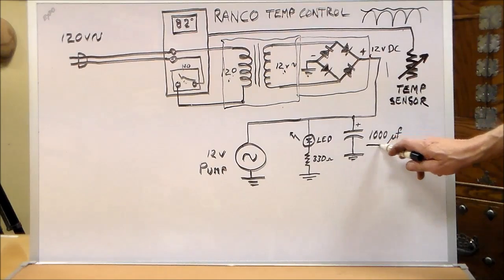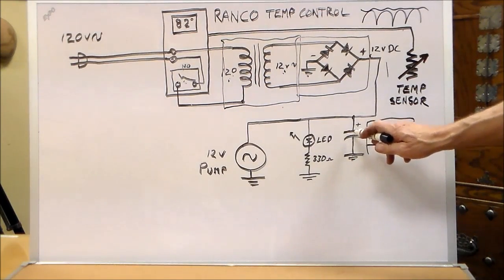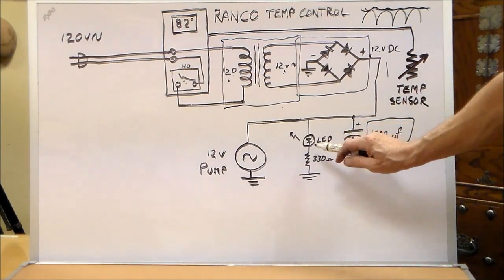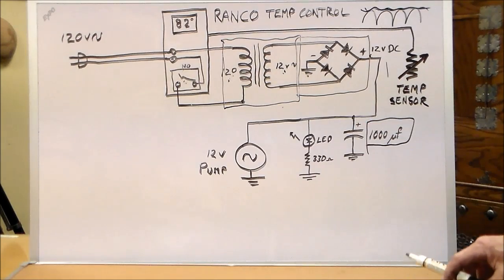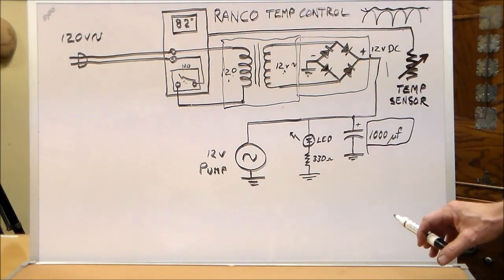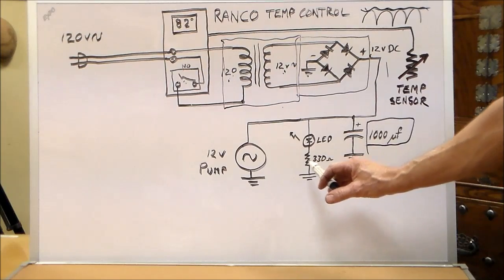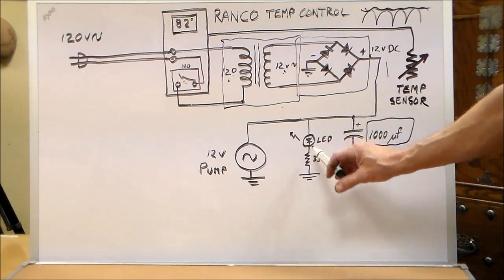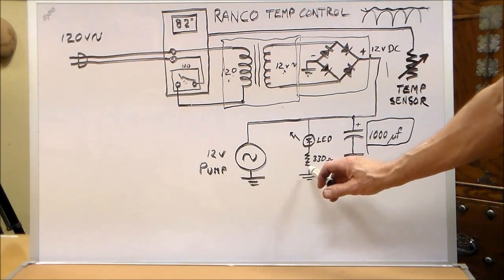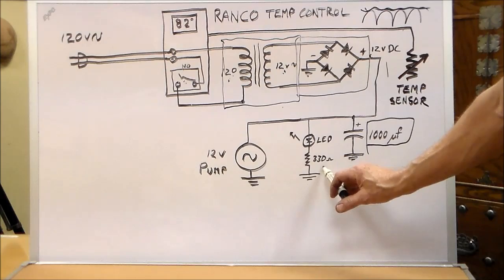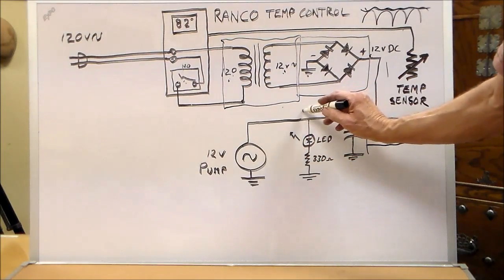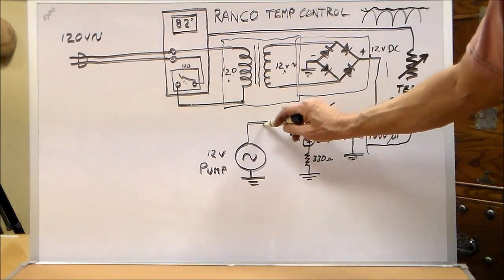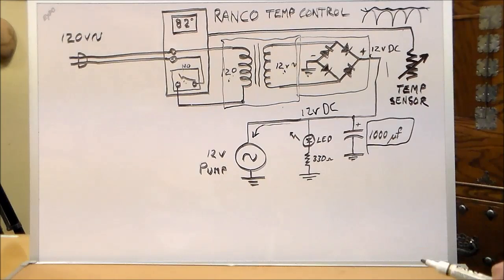So coming down here I put a condenser. I used a 1000 microfarad condenser, electrolytic to take out this rippling effect. And then I put an LED so I could tell that the power unit was functioning, and just for troubleshooting in case I had a problem with the pump. This would let me know that it's putting 12 volts out. So I put an LED in here and a current limiting resistor 330 ohms. Then this is the 12 volts coming out, and it's DC. And that's feeding the pump, the 12 volt water pump.